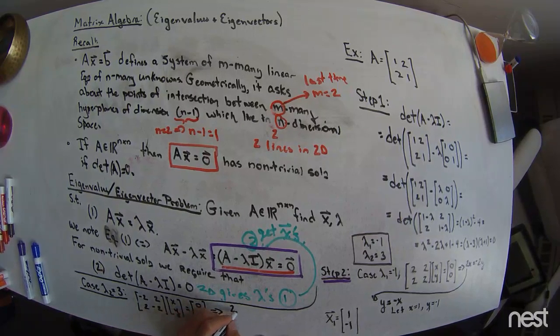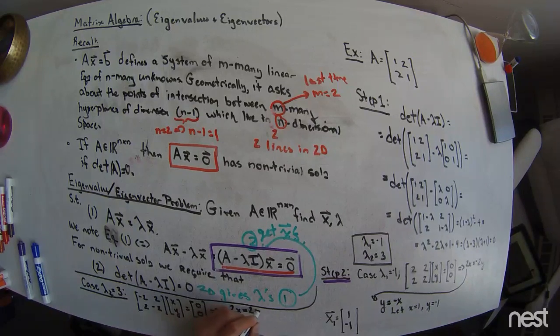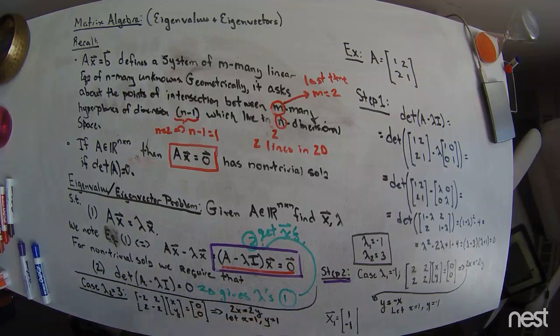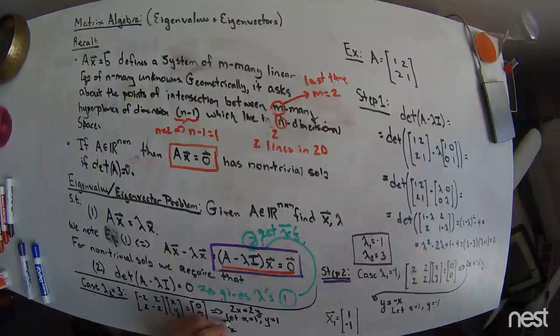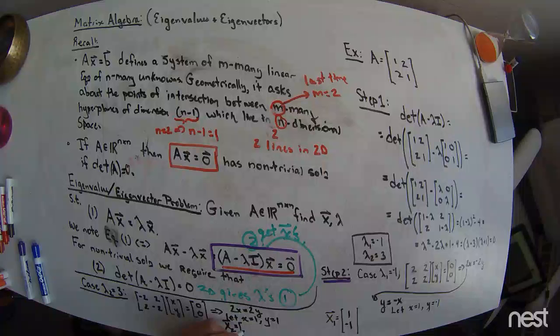Well, then we get the equation that 2X is equal to 2Y. I'm going to let X equal 1. And then that means Y is equal to 1. And so, my second eigenvector is equal to the vector 1, 1.